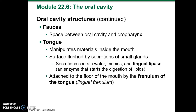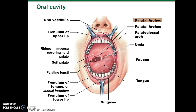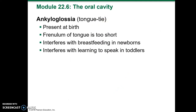This is the one I was referring to just a little while ago — being tongue-tied, or ankyloglossia. It's present at birth; the frenulum of the tongue is too short. It interferes with breastfeeding in newborns and with learning to speak in toddlers.